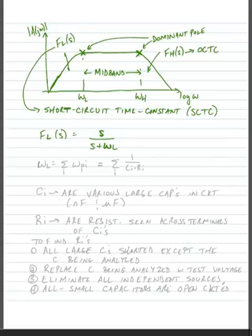Now, we're assuming a dominant pole, so we assume that omega L is equal to a summation from i up to the number of poles that there are of omega P sub i. So we assume that there are a bunch of poles, but we're going to sum them all together.